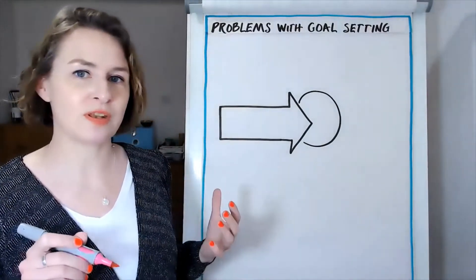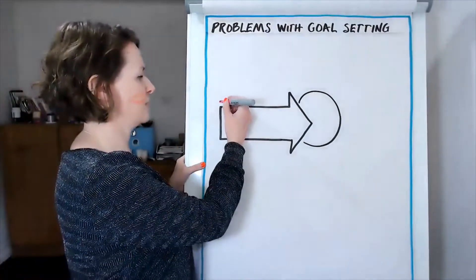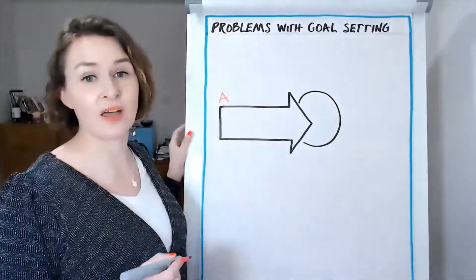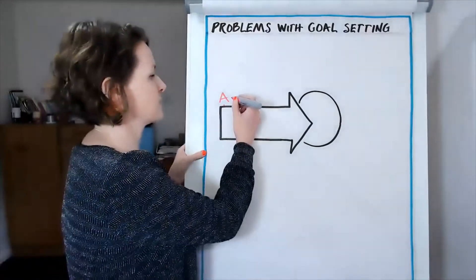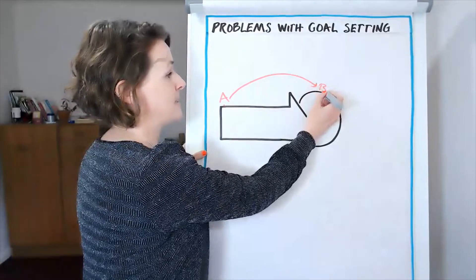And if we think about goal setting, often we think about starting from, let's say, point A, and we think, okay, I'd like to achieve a certain goal, create a certain outcome, which we're going to call B.